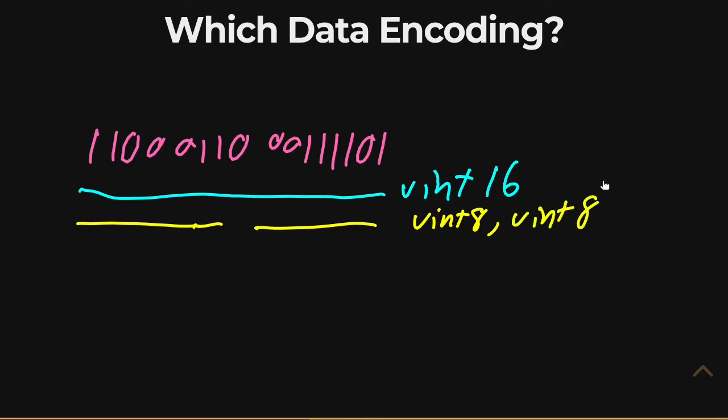And there'd just be two numbers that go up to 256, or one number that goes up to 65,535, right?